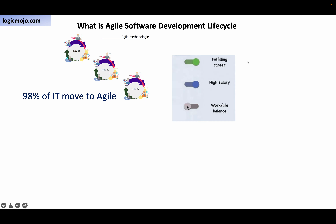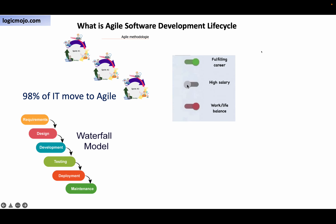For software development, many SDLC processes are followed. Previously, all industries were using the waterfall model for software development, and now all have moved to the agile process.